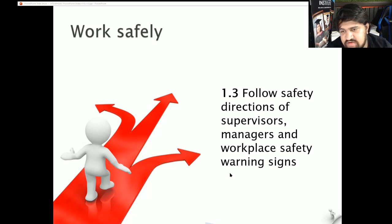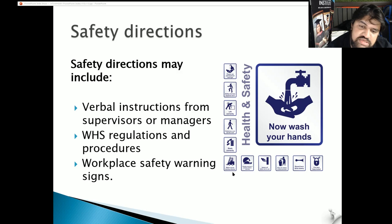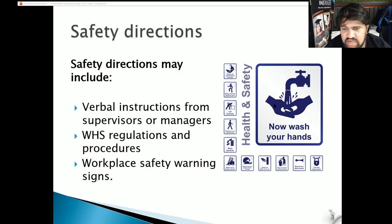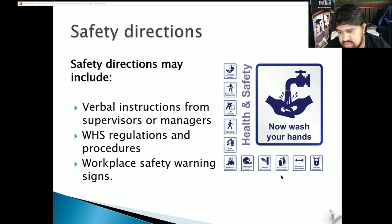Section 1.3: Follow safety directions of supervisors, managers and workplace safety warning signs. Safety directions may include verbal instructions from supervisors or managers, WHS regulations and procedures, and workplace safety warning signs. Every industry has a different set of signage requirements. In the kitchen we might not be required to have a forklift sign, but we might be required to wash our hands or dispose of rubbish correctly into designated bins.